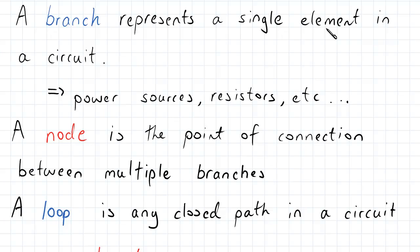A node is the point of connection between multiple branches. So if we have two or three or four branches and they're connected together at one point, that point will be called the node. And finally, a loop is any closed path in a circuit.